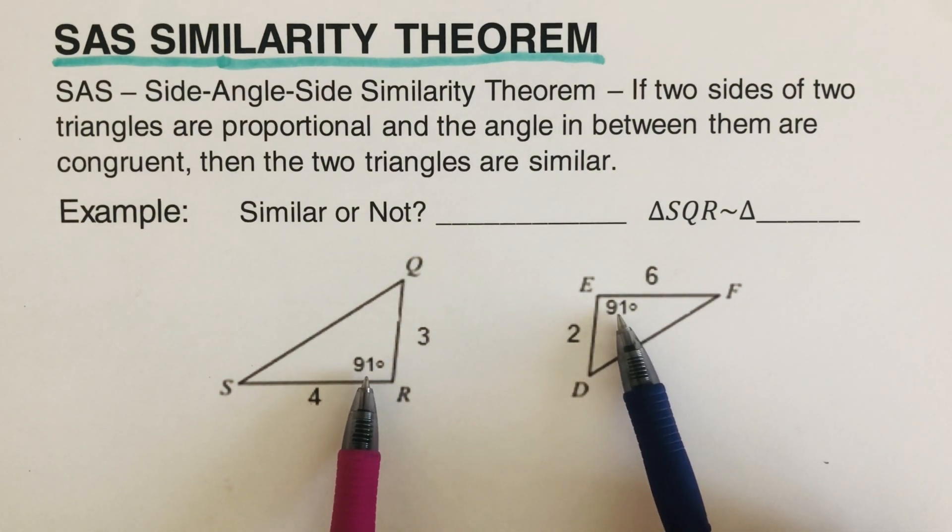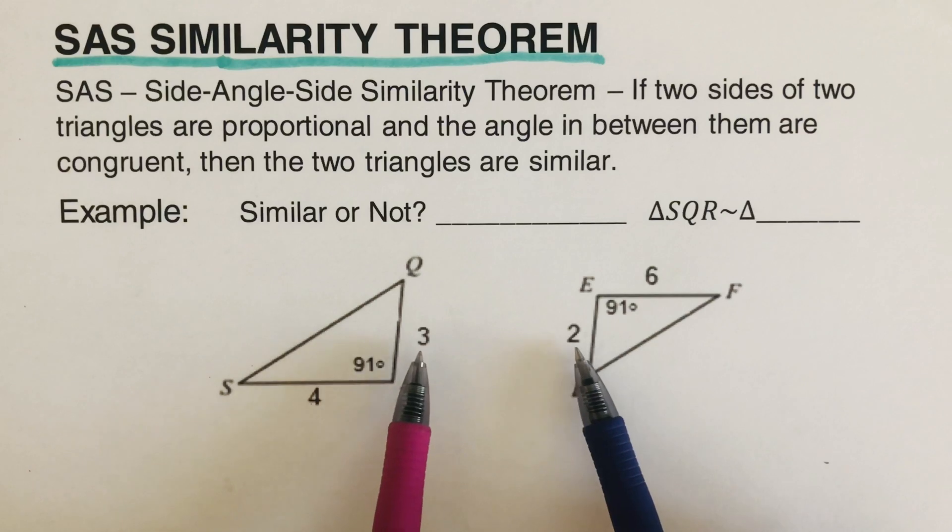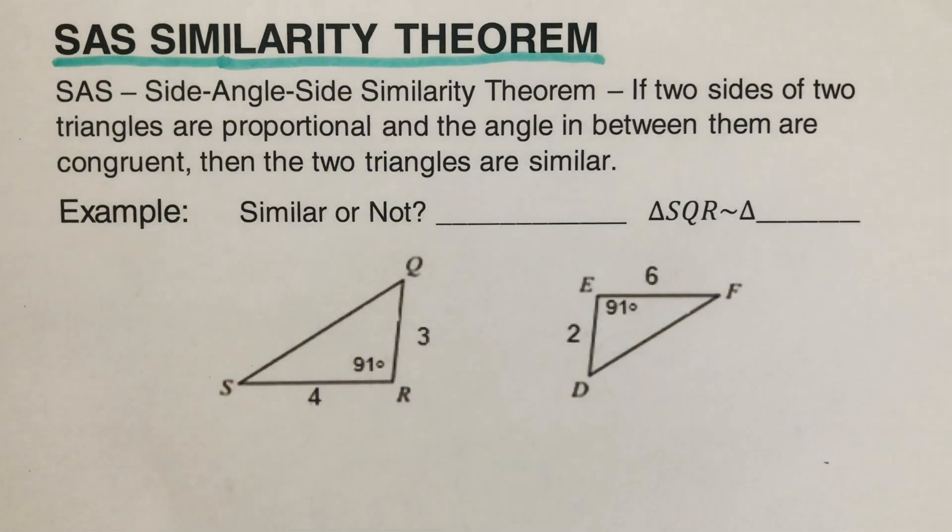So in this example we have 91 degrees. Now we don't know if this 4 and 6, and then this 3 and 2 are proportional to each other. So how do we test it if they are similar or not? The process that we're going to do or the test that we have to do is to pair up the long and the long, the long over the long, and the short over the short.